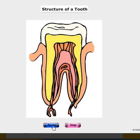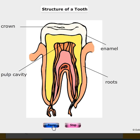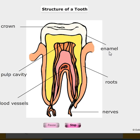Structure of the tooth. The teeth are held in place in the gums by roots. The top portion of the tooth is called the crown. The soft inside of the tooth is called the pulp cavity. It has its own nerves and blood supply. This top portion is the crown, this is the enamel, this soft portion is the pulp cavity, these are the blood vessels, these are the nerves, and these are the roots of the tooth.